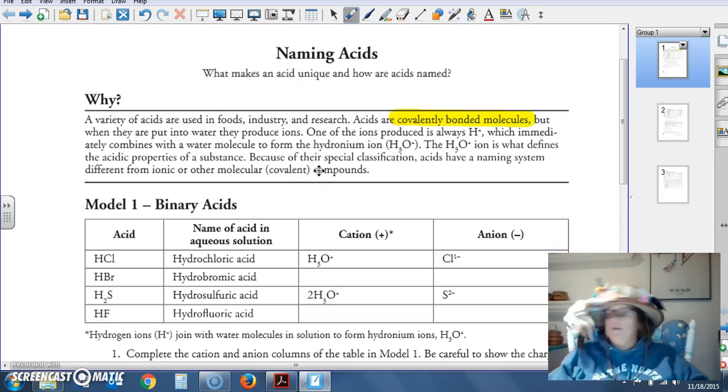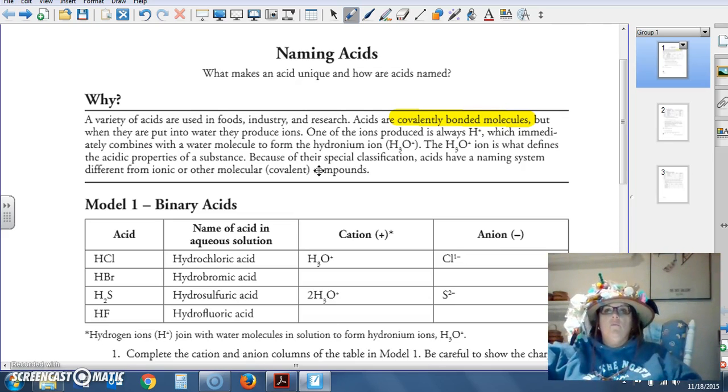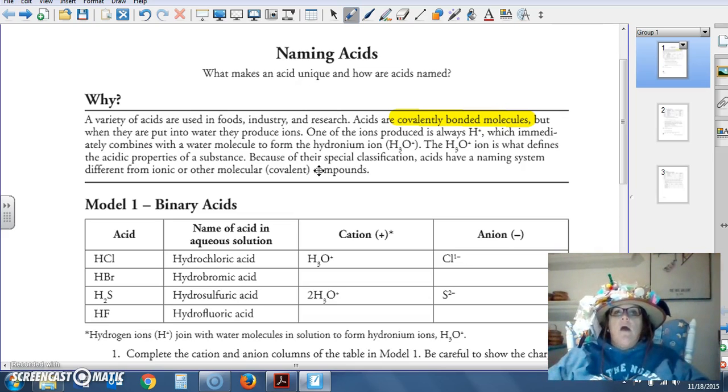One of the ions produced is always hydrogen plus one, which immediately combines with a water molecule to form the hydronium ion. The hydronium ion is what defines the acidic properties of a substance. Because of their special classification, acids have a naming system different from ionic and other molecular compounds.